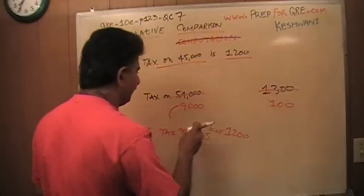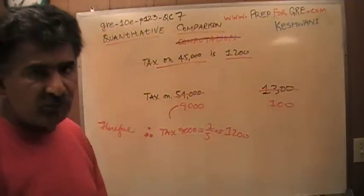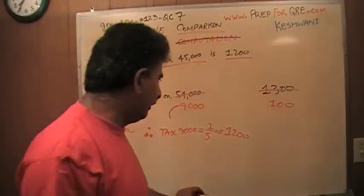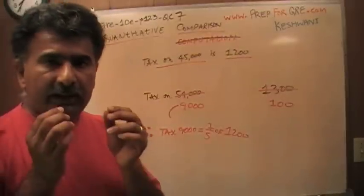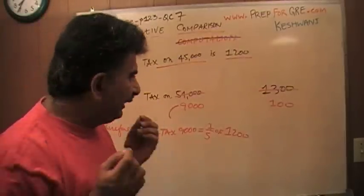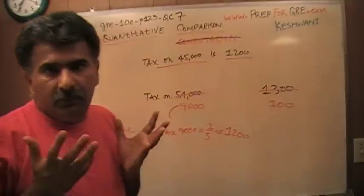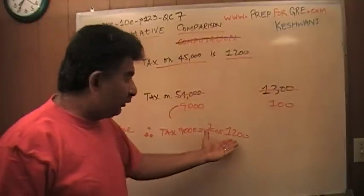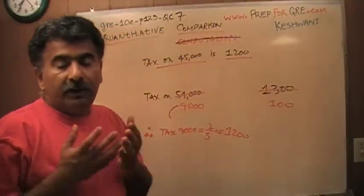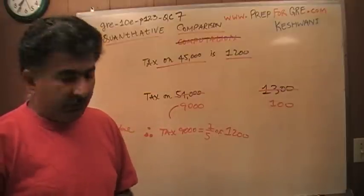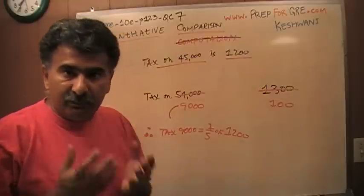Therefore, tax on 9,000 equals a fifth of 1,200. Well, how much is a fifth of 1,200? Can you tell me? And again, you don't have to sit there and tell me what is a fifth of 1,200. That is not the point here. The point here is, is a fifth of 1,200 less than or equal to 100? Well, I know a tenth of 1,200 is how much? A tenth of 1,200 is 120. A hundred and twenty dollars. A tenth of this. It is going to be 120 dollars.